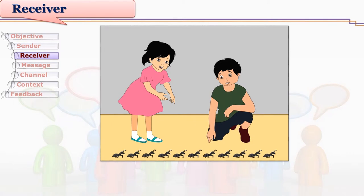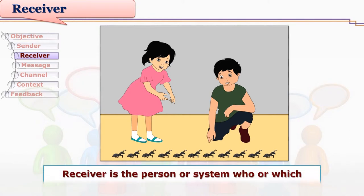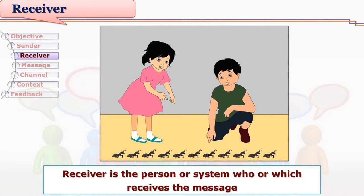See this picture — the girl is showing ants to her friend. The friend is astonished to see the ants walking in a queue. Here, the boy is the receiver of the message; the girl is talking to him and pointing out the queue of ants. So the receiver is the person, or maybe a system, who or which receives the message.